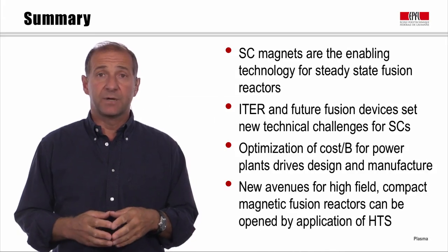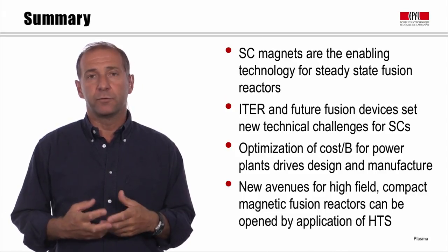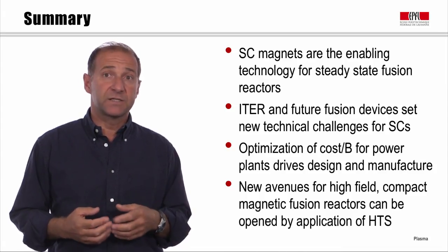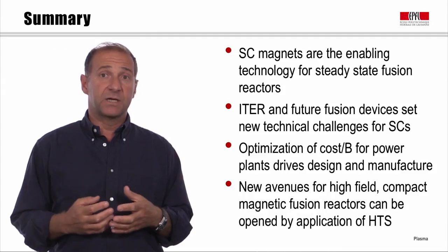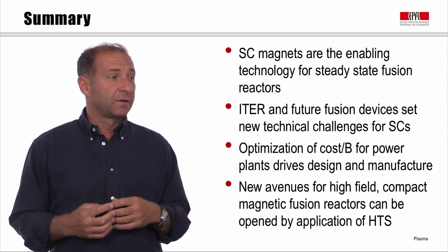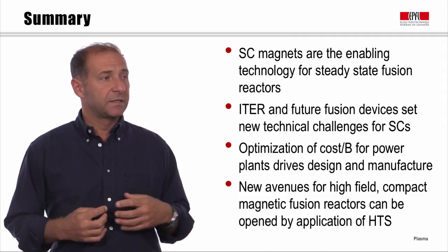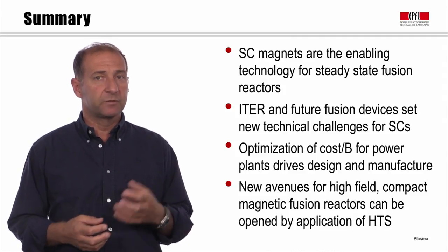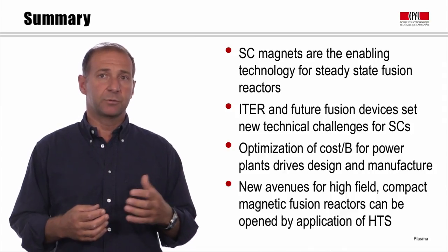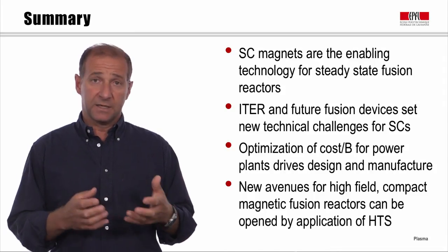In summary, we have seen that superconducting magnets are a main enabling technology for fusion reactor development. ITER and all future fusion devices set new and very demanding technical challenges for superconductors. A main element for the development of a power plant based on magnetic fusion is the optimization of the cost-to-performance ratio of the magnets — that is, the cost divided by the magnetic field intensity that can be produced over a large volume — and that is the main driver for design and manufacture of the magnets and the reactor. New avenues for high-field compact magnetic fusion reactors can be opened by the application of high-temperature superconductivity.